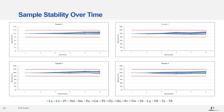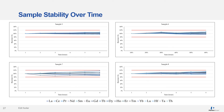Looking at sample stability over time, for samples one through four the recovery for all rare earth elements was clearly between 80 and 120 percent over the six hour run. Moving on to samples five through eight, we again had good recovery between 80 and 120 percent for all samples across all rare earth elements.